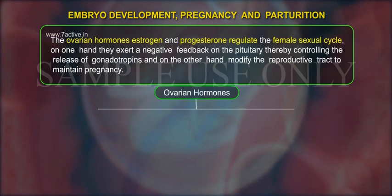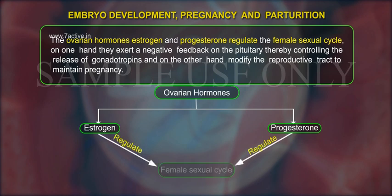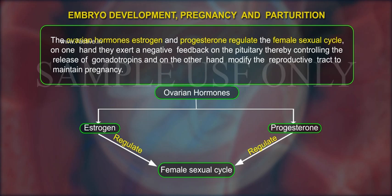The ovarian hormones, oestrogen and progesterone, regulate the female sexual cycle. On one hand, they exert a negative feedback on the pituitary, thereby controlling the release of gonadotropins, and on the other hand, modify the reproductive tract to maintain pregnancy.